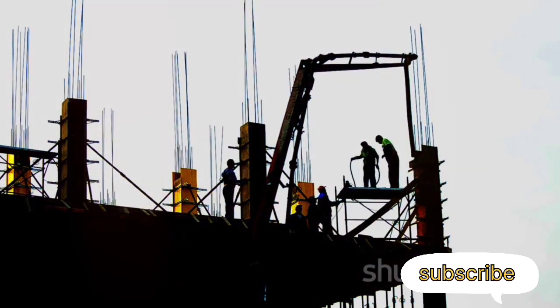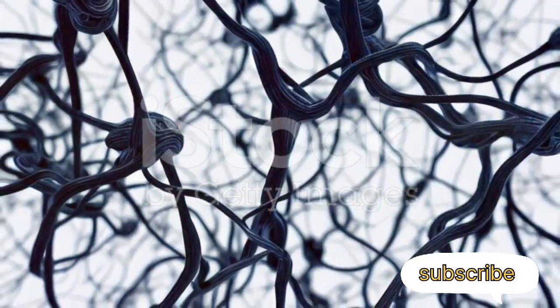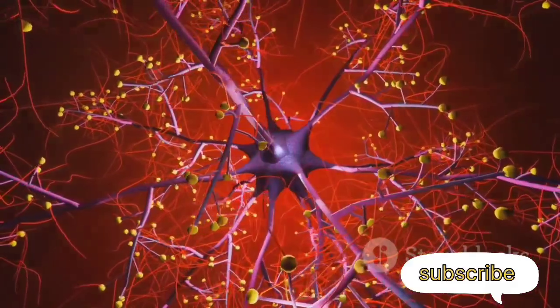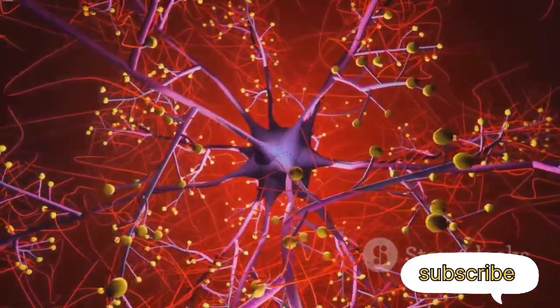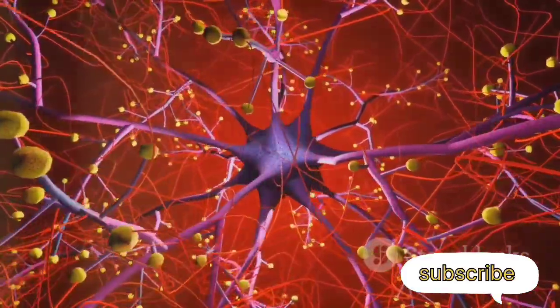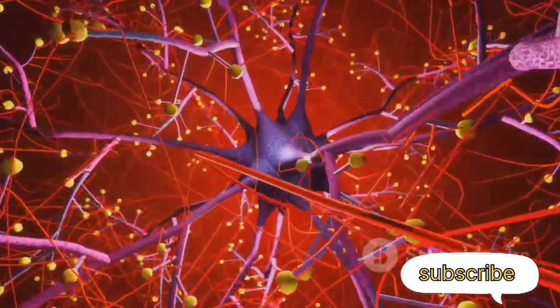But remember, this is a simplified analogy. In reality, the process is much more complex. Each type of neuron can have thousands of connections with other neurons, creating a vast and intricate network that allows us to think, feel, move, and experience the world around us.